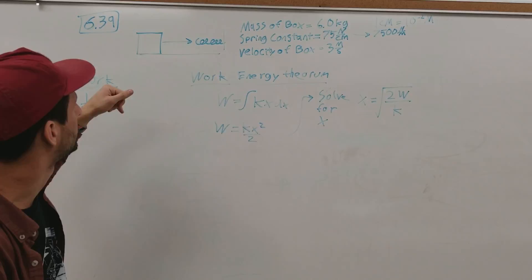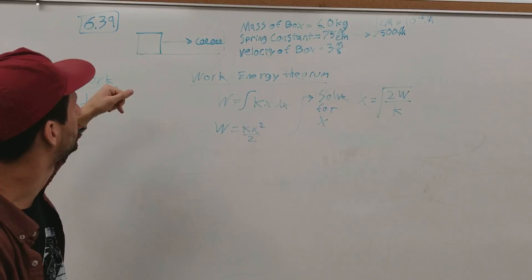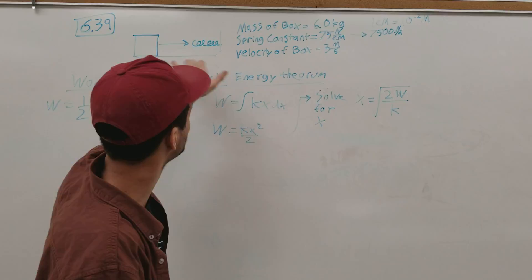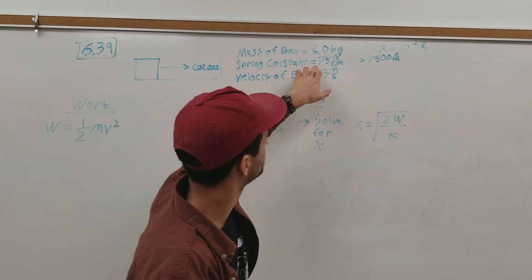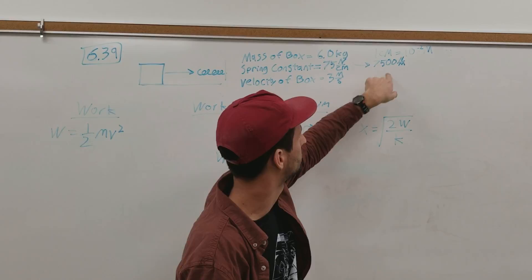So these are all the givens in the problem. We've got the mass of the box, 6 kilograms, we've got the velocity of the box which is traveling 3 meters per second, and then we've got a spring constant which is 75 newtons per centimeter. And since that's not standard I went ahead and changed it using this conversion to 7500 newtons per meter.